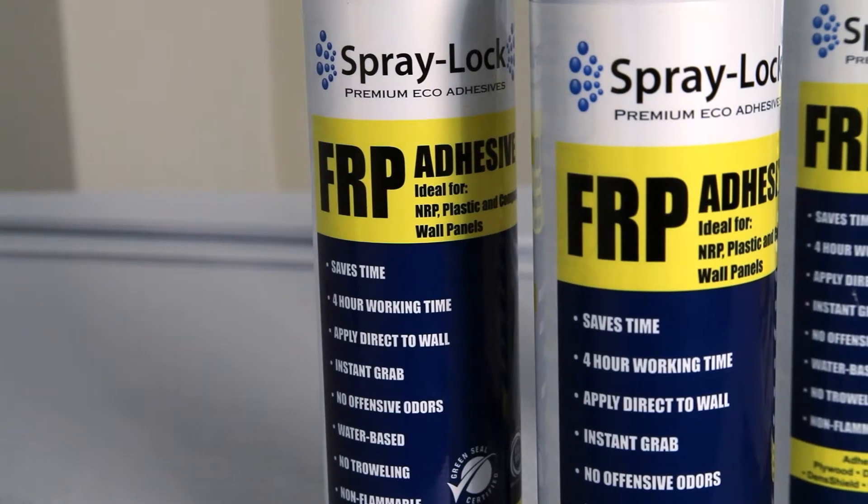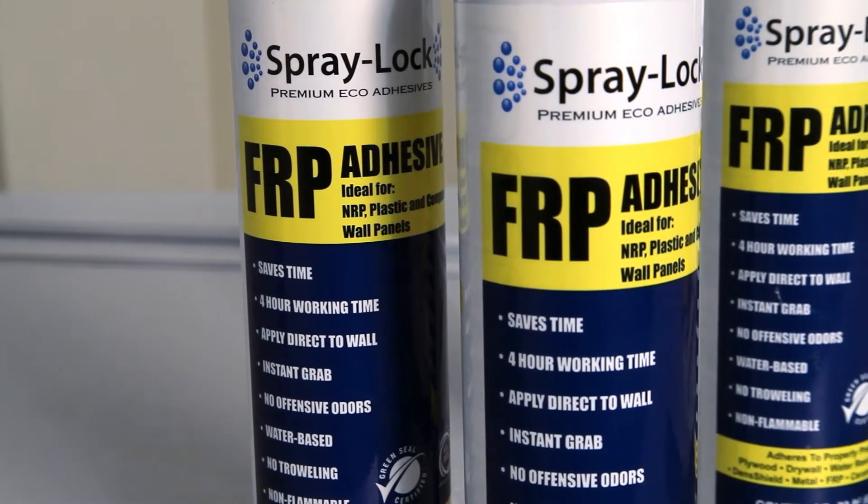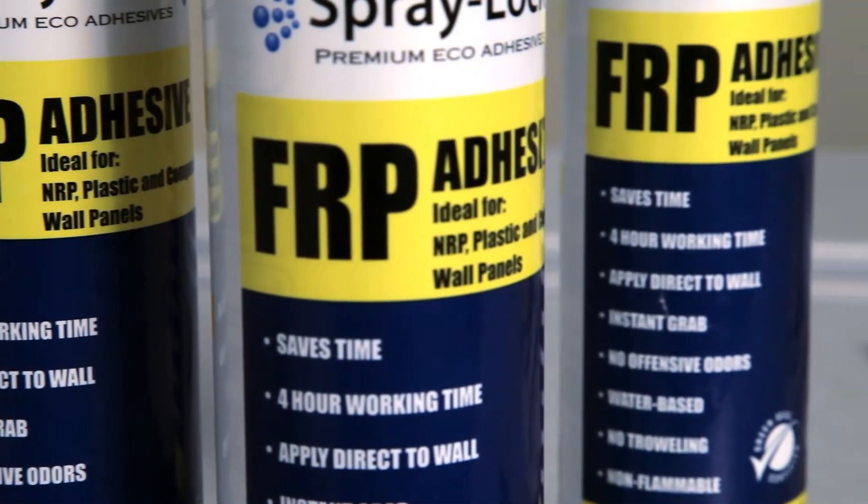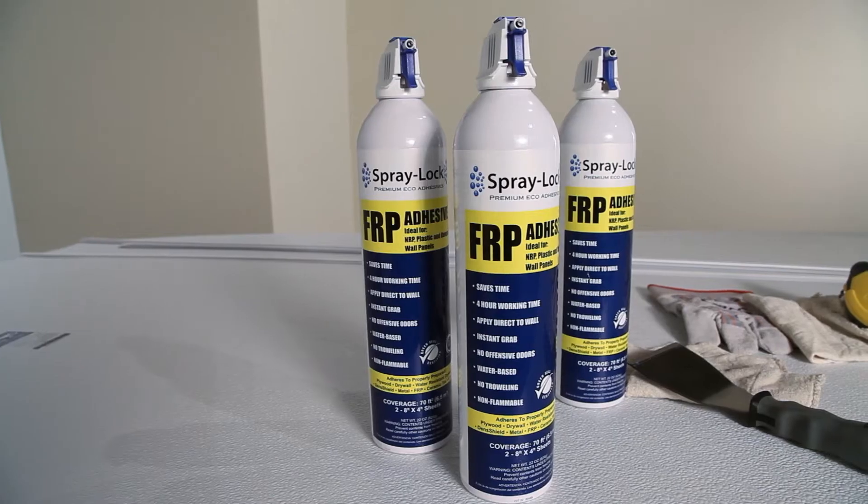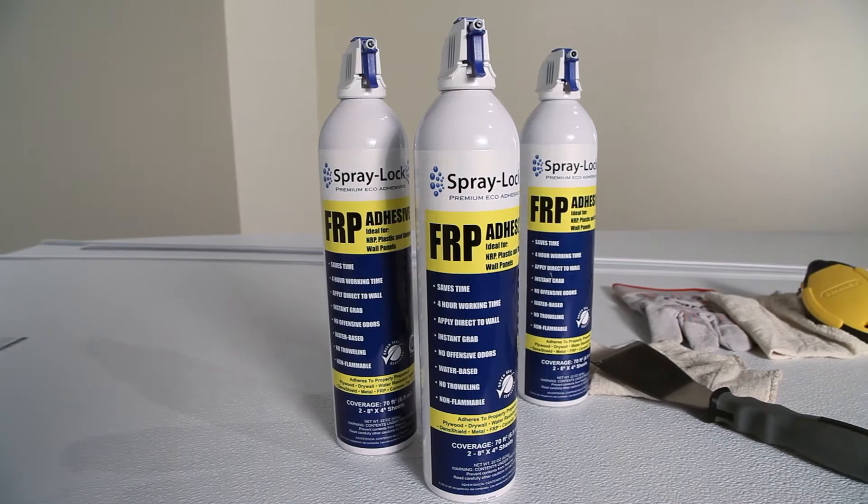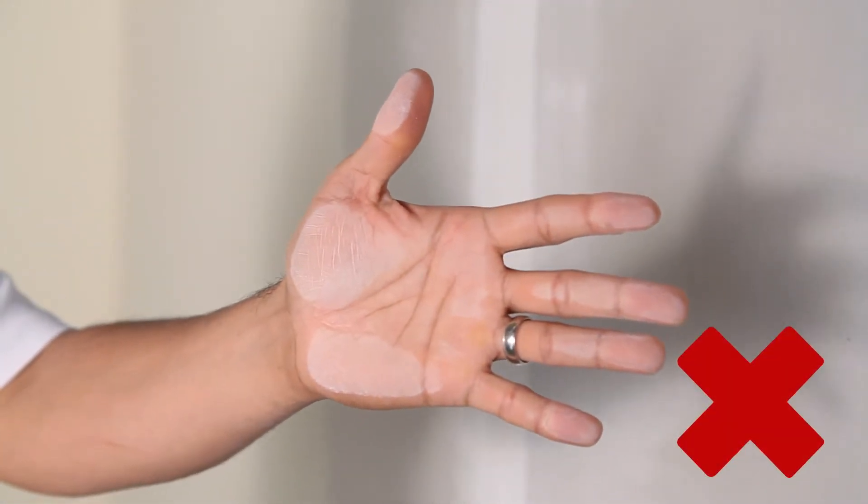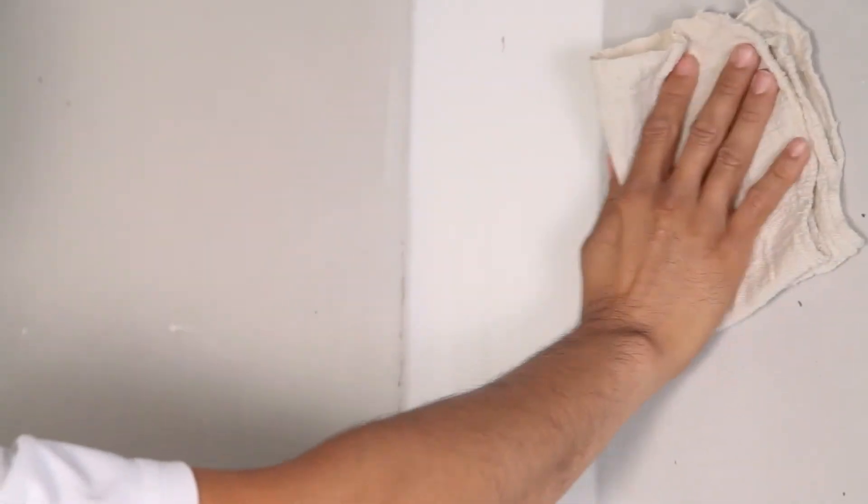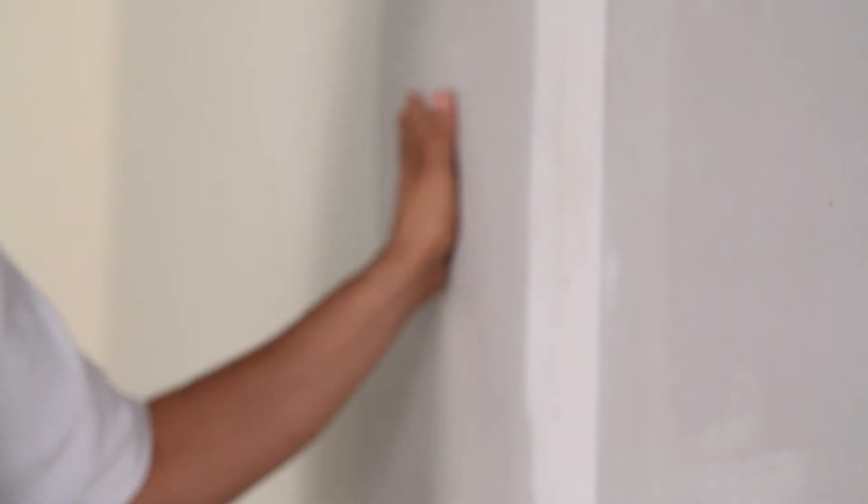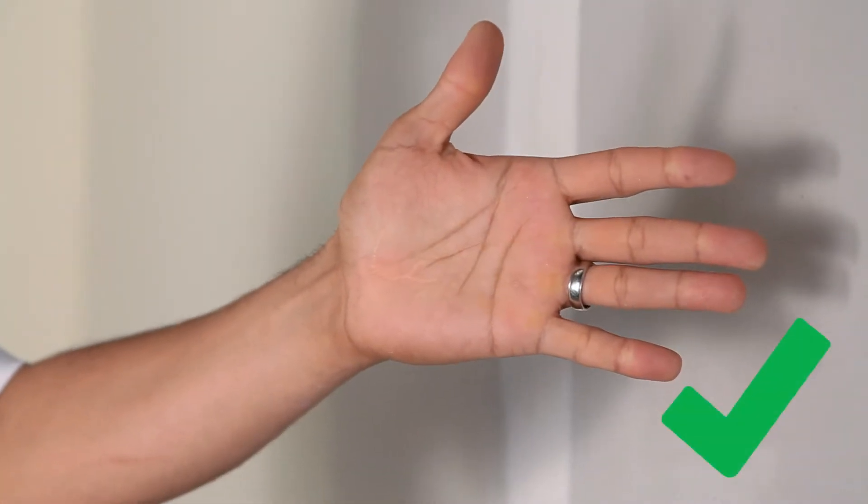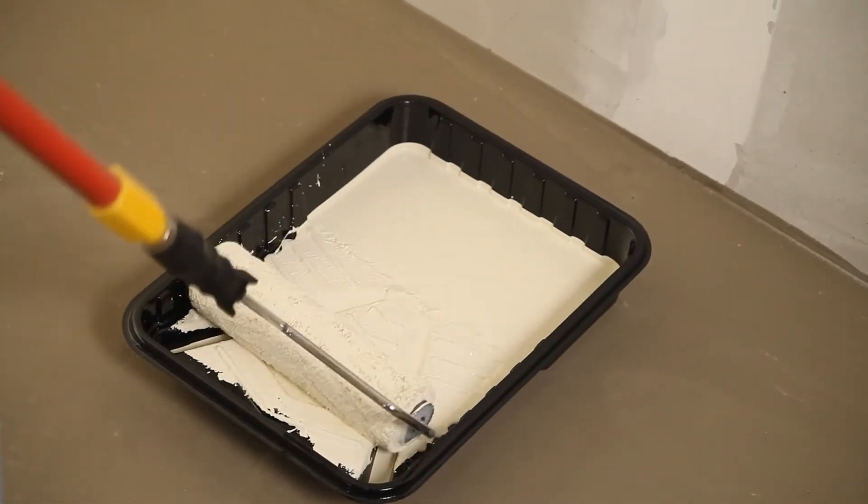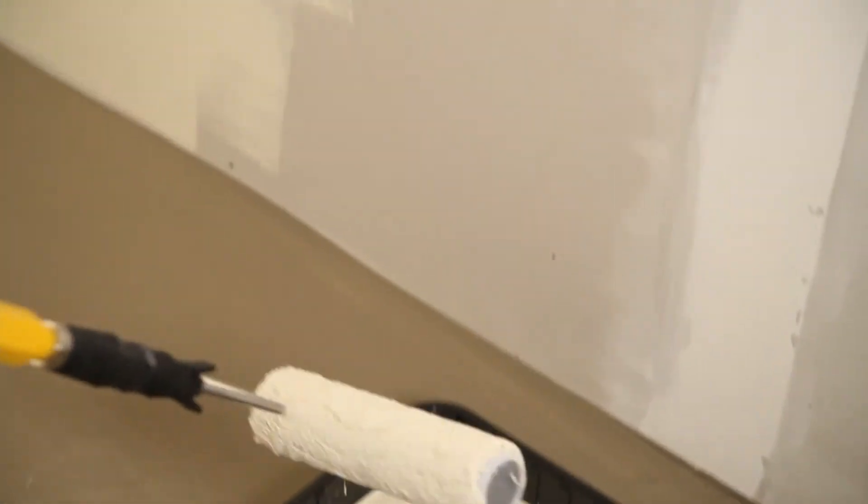Store adhesive at a minimum temperature of 68 degrees for 24 hours prior to installation. Condition the adhesive and panels per manufacturer's recommendations. Ensure substrate, wall coverings, and surrounding areas are clean and dust-free. Damp wipe the substrate if dust is present. If dust is still present, then prime the joint compound to seal its surfaces.